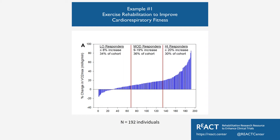One example would be a case in which multiple individuals are prescribed an intervention to improve cardiorespiratory function. We have demonstrated that the response to a standardized treatment can range from a group of individuals — almost one-third of the cohort — who get very little benefit from the treatment, versus another group of about 30 percent of the cohort that have an extremely robust response. We want to understand those two extremes.